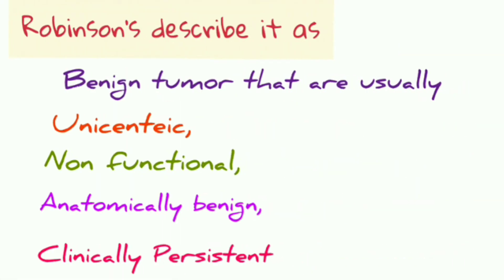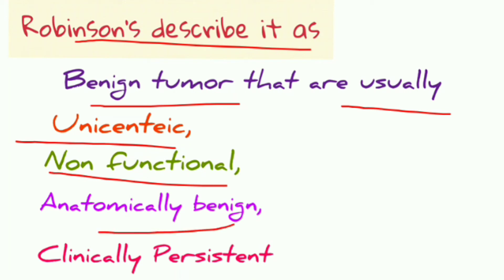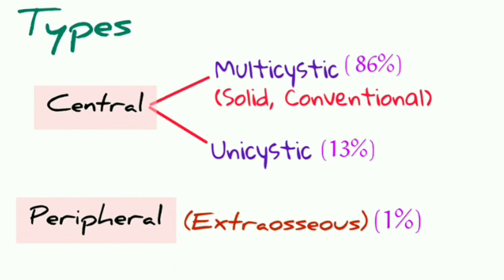Robinson described ameloblastoma as benign tumors that are usually unicentric, non-functional, anatomically benign, and clinically persistent. There are different types of ameloblastoma: it can be central or peripheral. Central means it will be in bone, and peripheral means it will be in the gingiva or soft tissues.